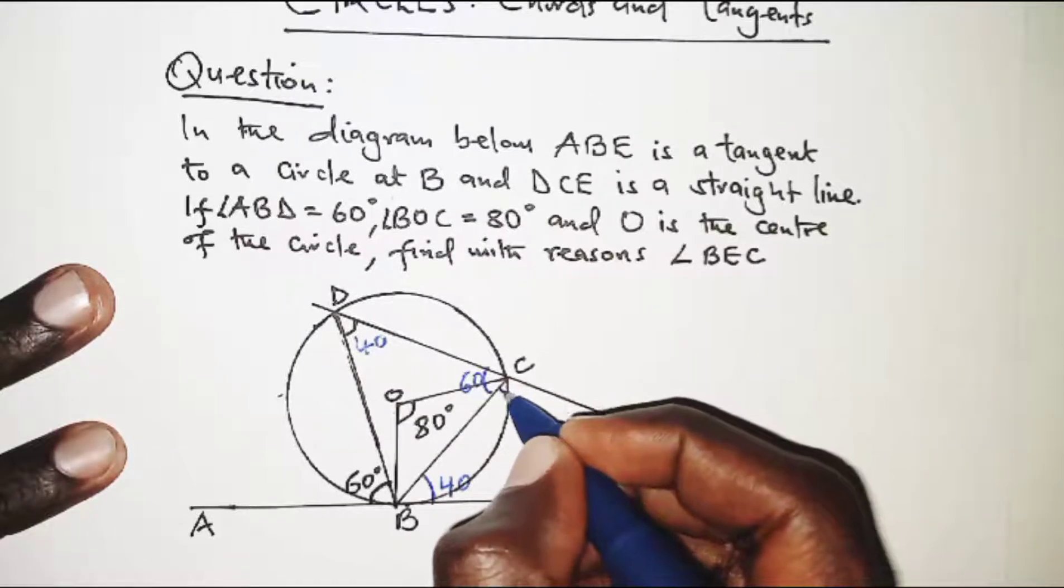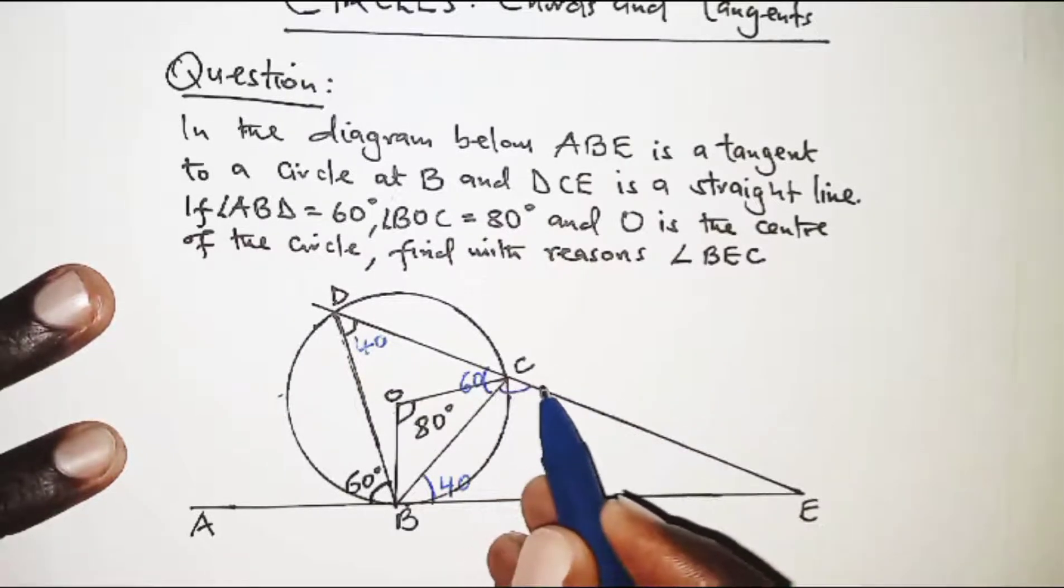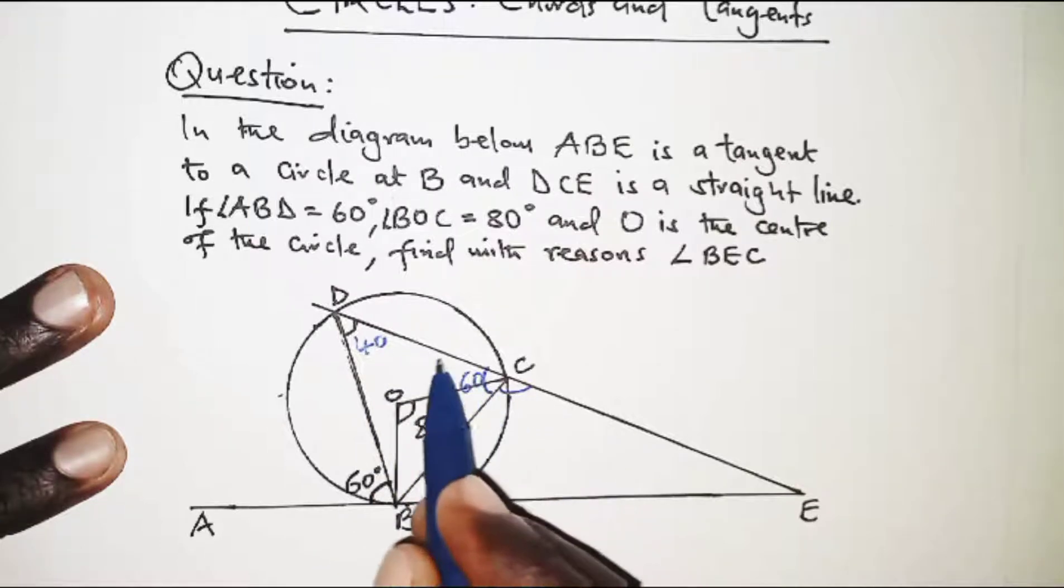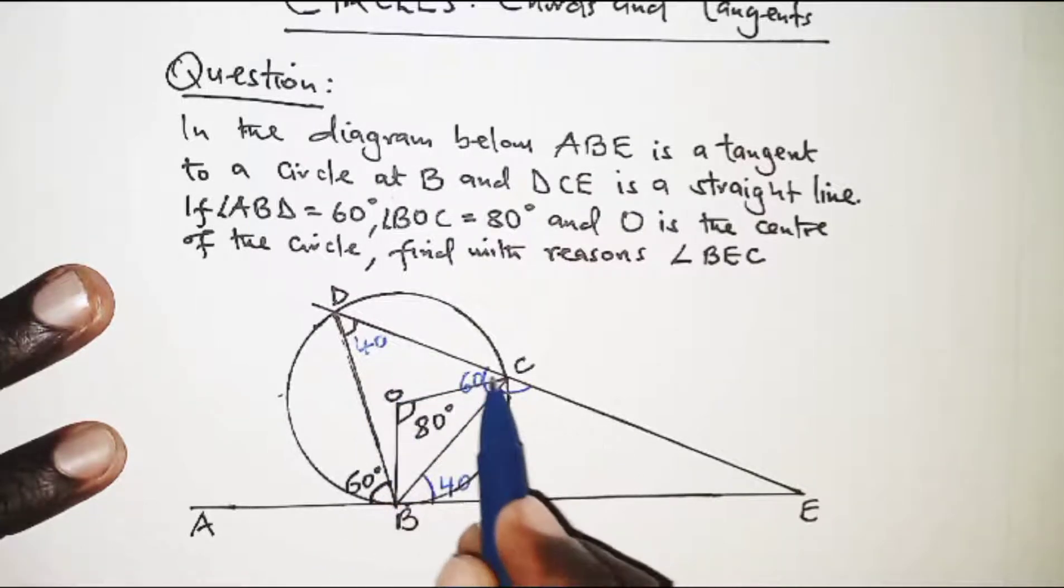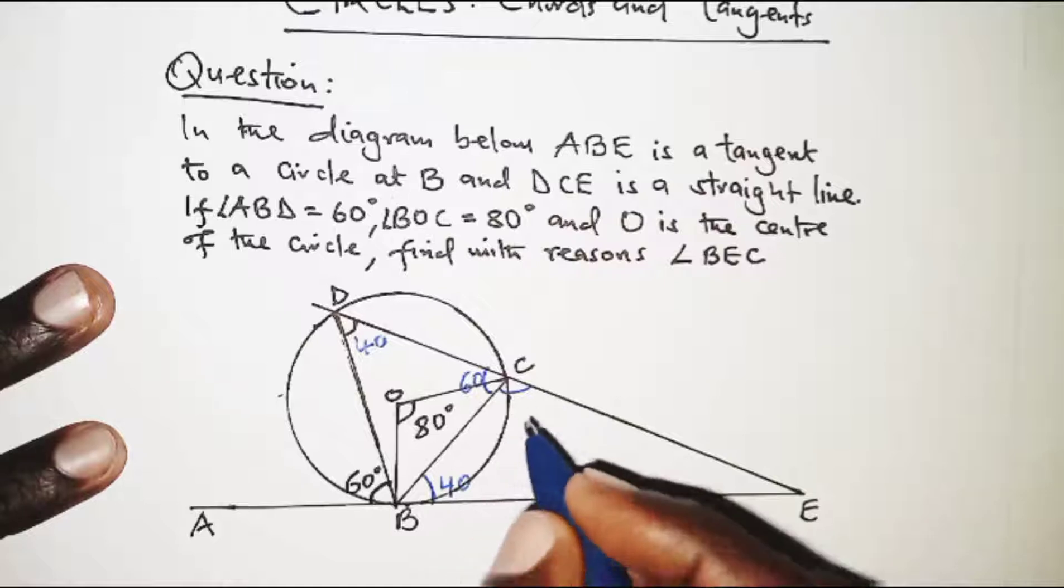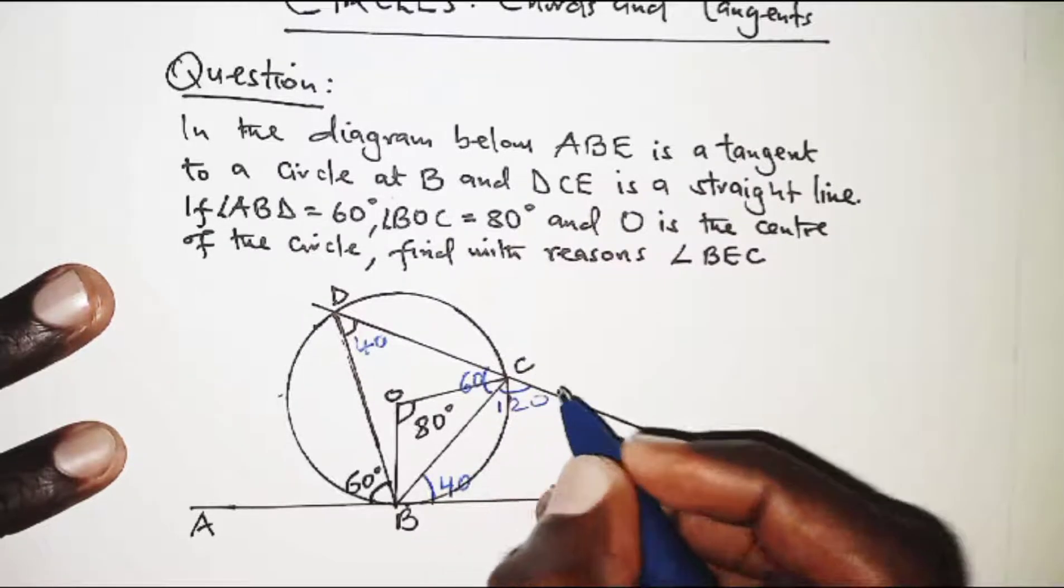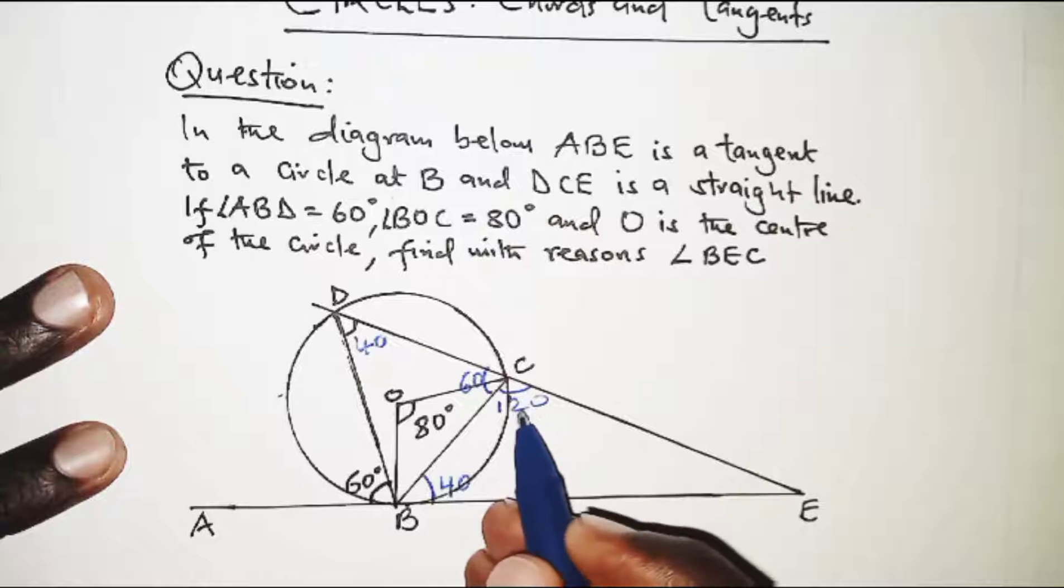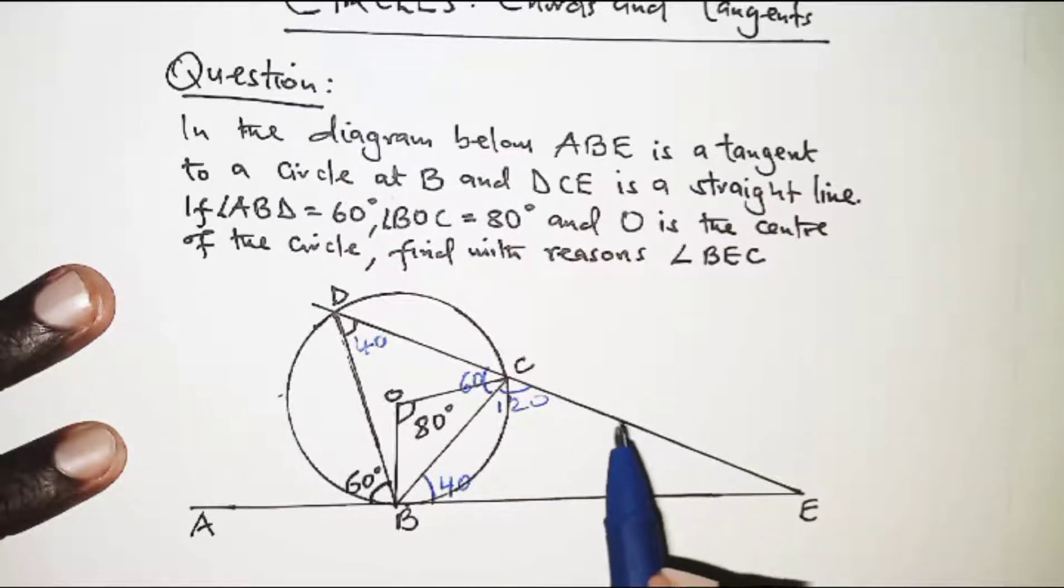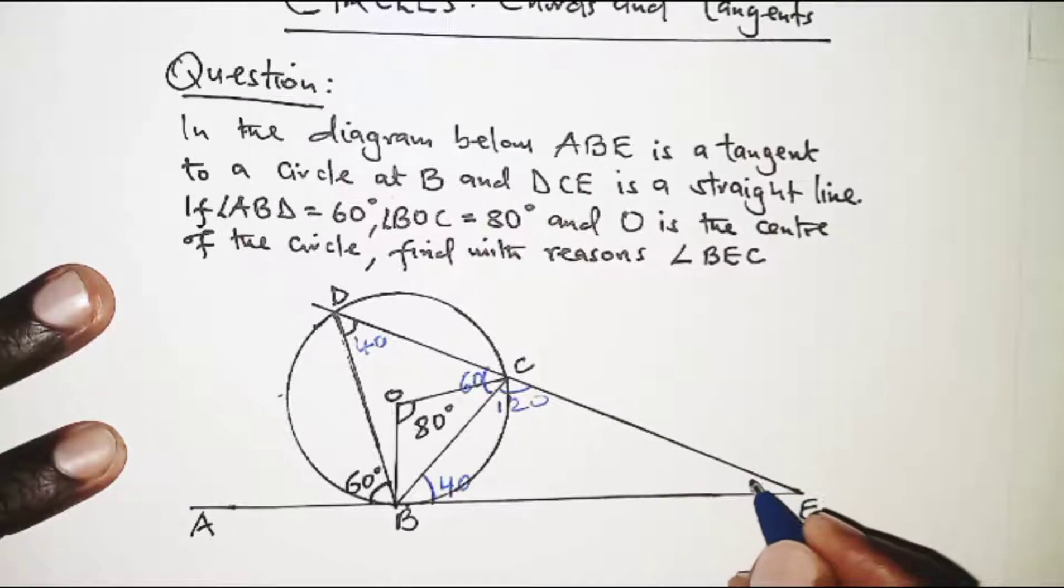Now at this particular point we can get the angle here. Angles on a straight line should add up to 180 degrees. So here we need to have 120 so that 60 plus 120 is 180.